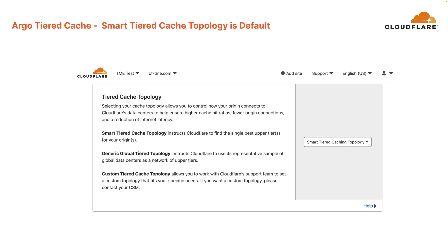Once Argo Tiered Cache is enabled, there are multiple topology configurations possible. Smart Tiered Cache topology is the default and is available for free for all plans. This is also recommended for most deployments, instructing Cloudflare to find the single best upper tier for your origins. Generic and custom topologies are only available for enterprise plans. Generic global tiered topology balances between cache efficiency and latency and instructs Cloudflare to use all Tier 1 data centers as upper tiers. Custom tiered cache topology allows customers to set a custom topology that fits specific needs, for example, upper tiers in specific geographic locations serving more customers.